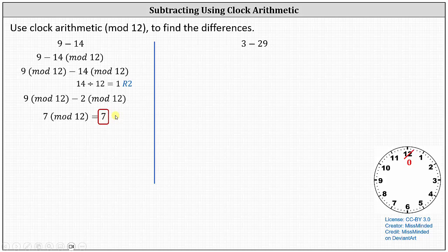To model this on the clock, we can think of the hour hand pointing at 9, and then because we're subtracting 14, we go back 14 hours. If we go back 12 hours we're back at 9 o'clock, then we need to go back 2 more hours — back 13 hours, back 14 hours — and we can see it's 7 o'clock.